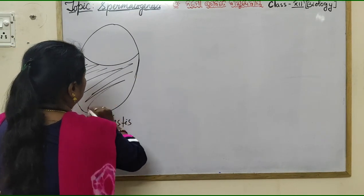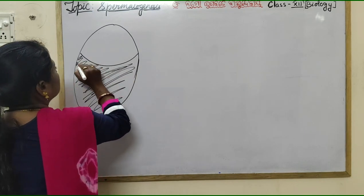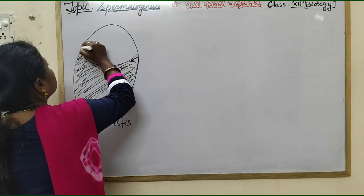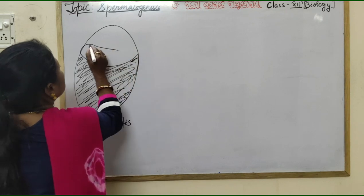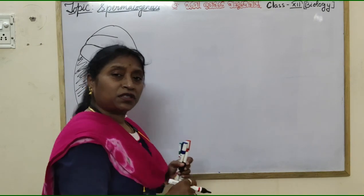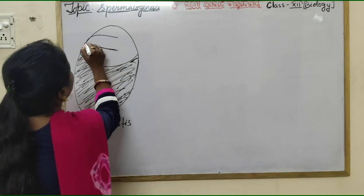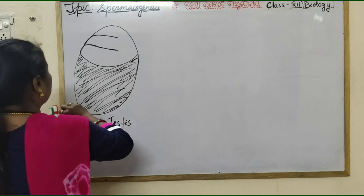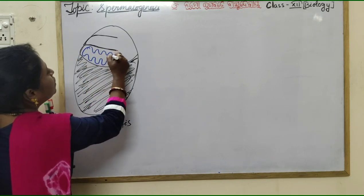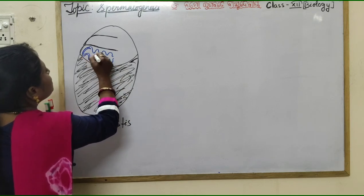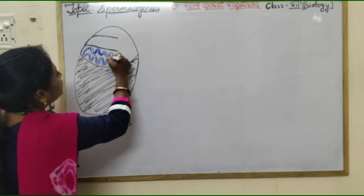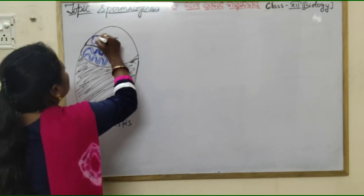This is the outer part. Here are the testicular lobules. Just recall — the testis is divided into many lobules. The tunica albuginea invaginates and makes the lobules, or compartments. And within the lobules, highly convoluted seminiferous tubules are found.